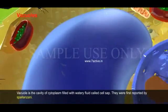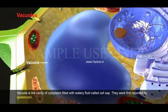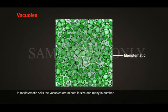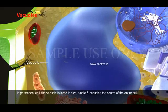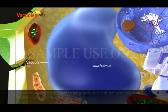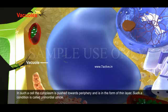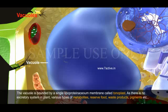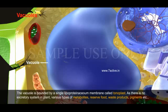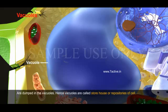Vacuoles: A vacuole is a cavity of the cytoplasm filled with watery fluid called cell sap. They were first reported by Spallanzani. In meristematic cells, vacuoles are minute in size and many in number. In permanent cells, the vacuole is large in size, single, and occupies the center of the entire cell. In such a cell, the cytoplasm is pushed towards the periphery in the form of a thin layer; such a condition is called primordial utricle. The vacuole is bounded by a single lipoproteinaceous membrane called the tonoplast. As there is no excretory system in plants, various types of metabolites, reserved food, waste products, pigments, etc. are dumped in the vacuoles. Hence, vacuoles are called the storehouse or repositories of the cell.